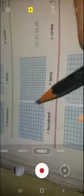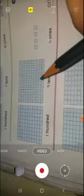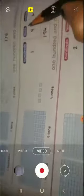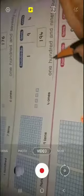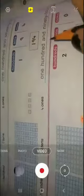Next me kya hai? One big box, 100. Nine tenses and four ones. To humne yaha hundred ki place per 1 likha. Tens ki place per 9 and ones ki place per 4. To ye kya ho gya? One hundred and ninety four.